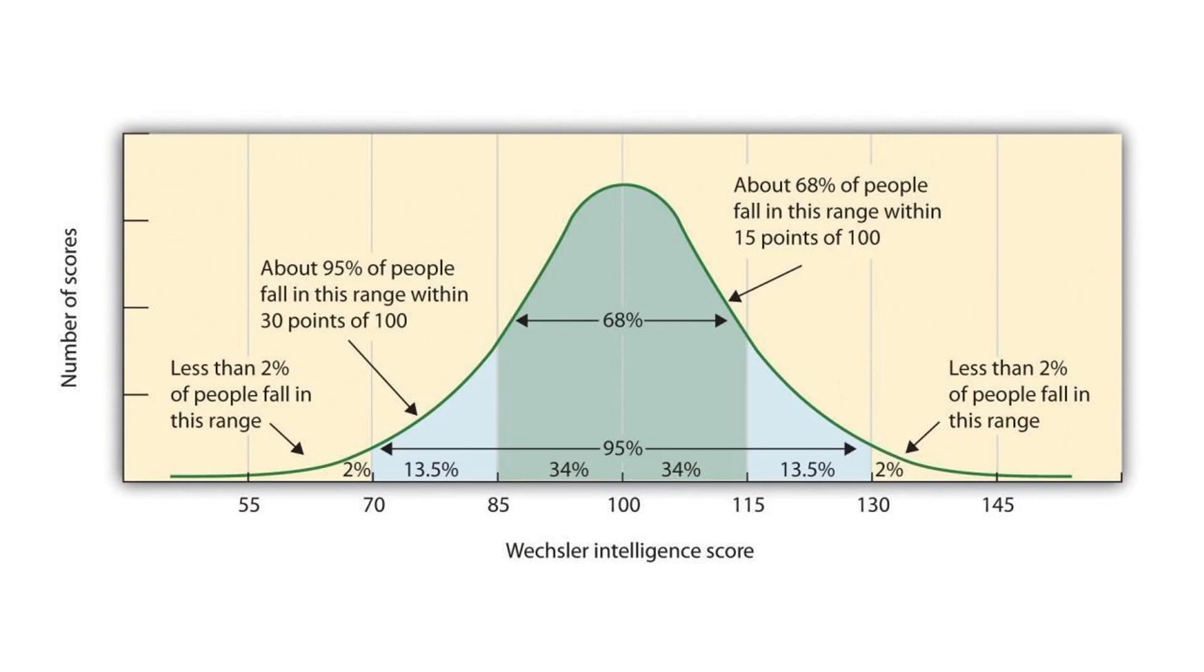This is IQ, the Weschler intelligence score. This is the bell curve. It means that 2% of people have IQs less than 70. 2% have IQs over 130. And the majority of people are around the average, 68% are between 85 and 115. So that's 15 points around 100. That's the IQ.